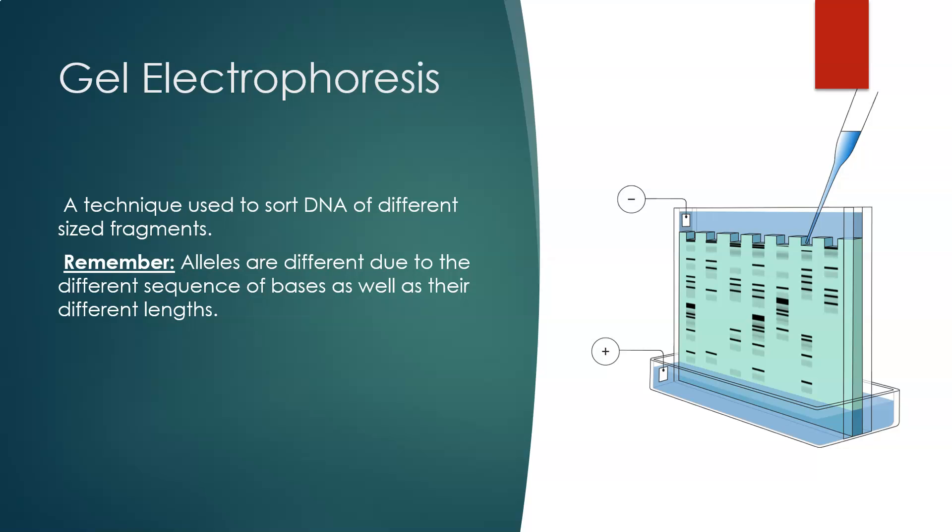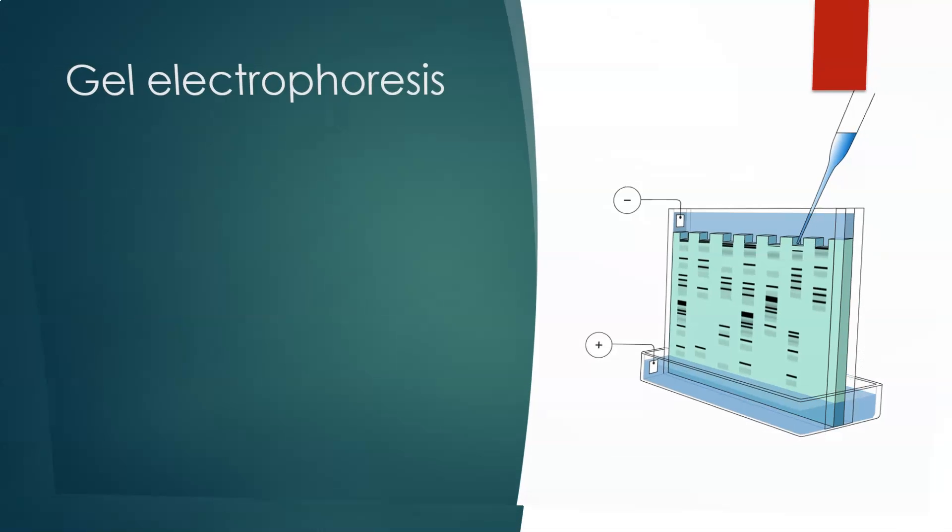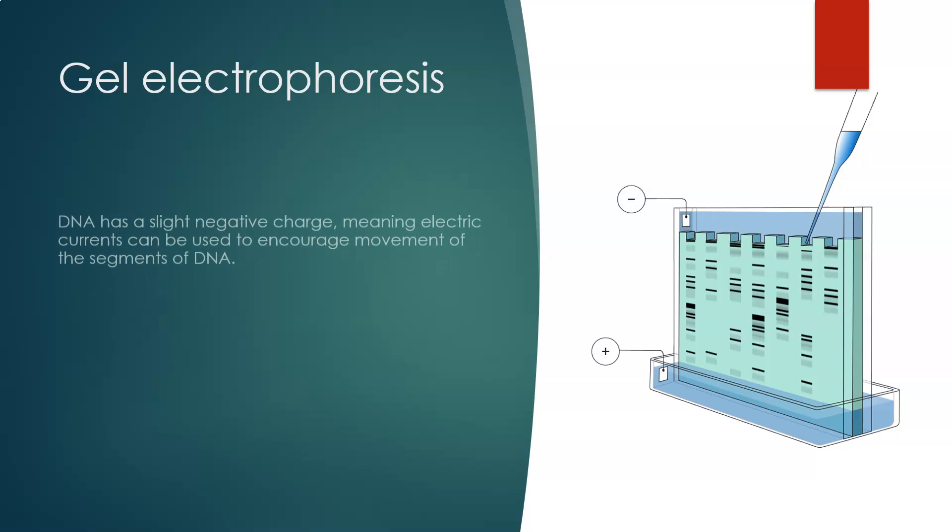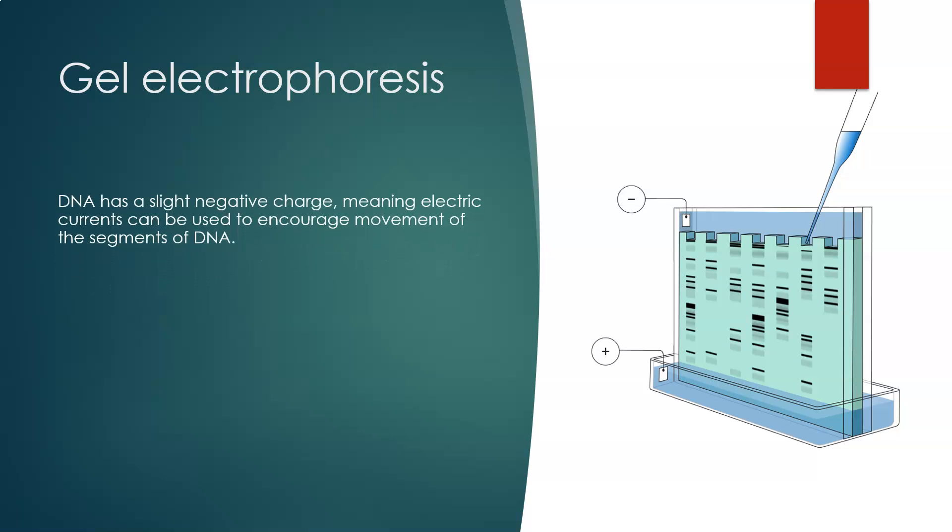Remember those base sequences that we looked at first of all. Well, this is where they come into play. Gel electrophoresis can identify alleles by separating out all the different lengths. DNA has a very slight negative charge, meaning if you pass an electric current, it can then be used to encourage movement of the segments of DNA. And if they're in different lengths, they then sort themselves out into size lengths.